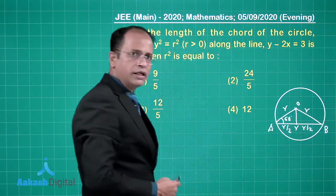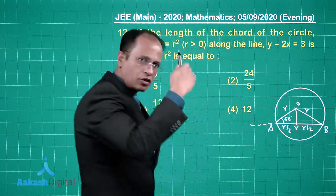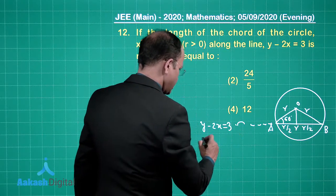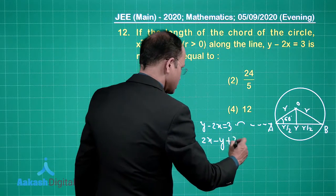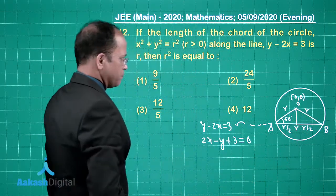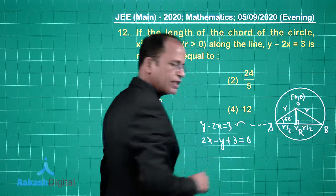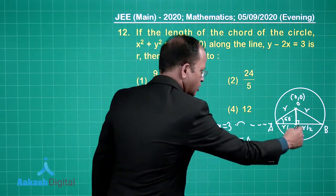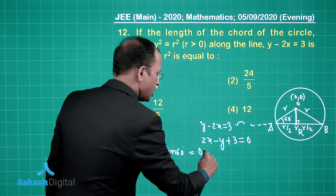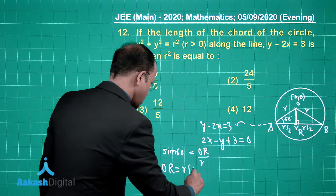The chord lies on the line y - 2x = 3, or equivalently 2x - y + 3 = 0. The centre is at (0,0). Using sin60° = OR/r in the triangle, the perpendicular distance OR from the centre to the chord is r·sin60° = r√3/2.